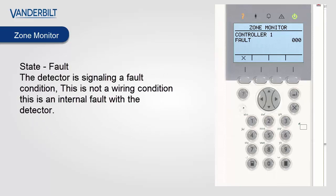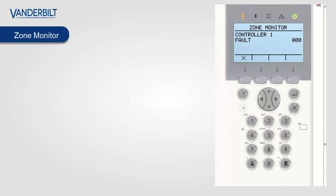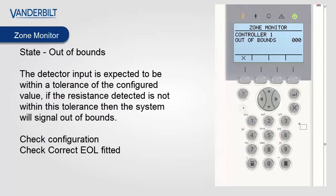Zone state fault: certain detectors will run internal tests and can signal a fault condition. This is not a wiring condition — this is an internal fault with the detector. Zone state out of balance: the detector input is expected to be within a certain tolerance of the configured end-of-line value. If the resistance detected is not within this tolerance the system will signal out of bounds. Please check the end-of-line configured, and if you perceive this value to be correct you may switch the system to use wide range end-of-line.